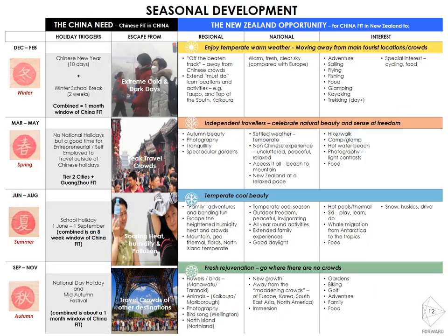This diagram shows in a bit more detail what the appeal is — what's happening at a national level regionally, the stories we can tell, and what potentially are highlight interests for the Chinese at those times of year. It's very important that even though many of our experiences can be done 12 months of the year, we have highlight experiences that characterize what's particularly enjoyable at different times.